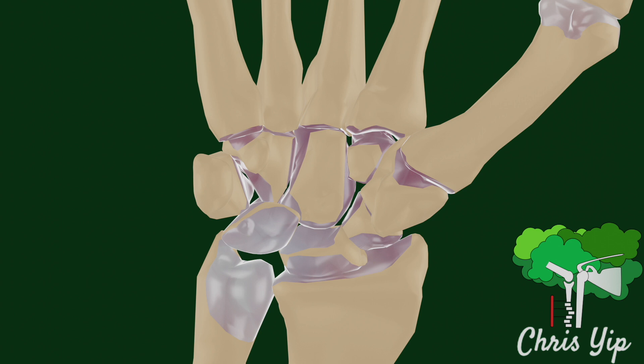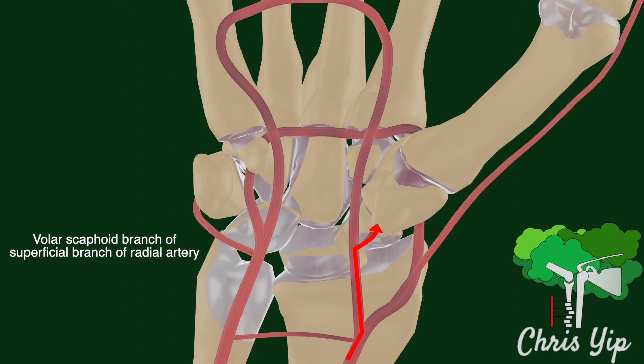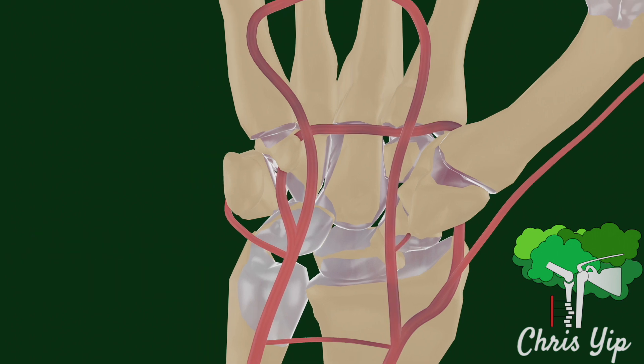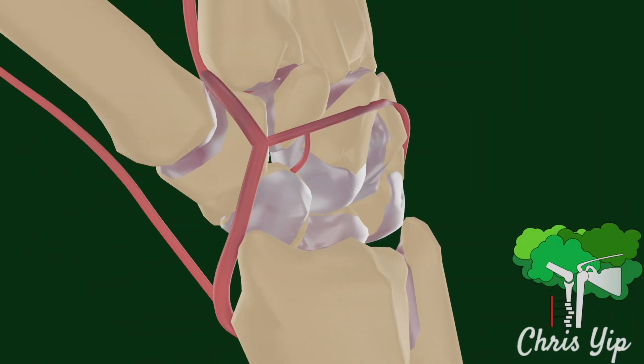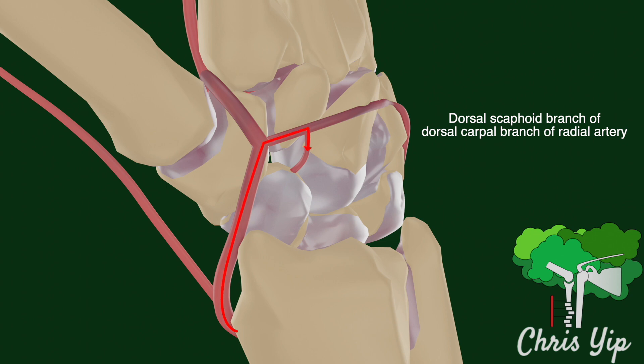As 80% of the surface area of the scaphoid is composed of articular cartilage, it can only receive blood from the volar scaphoid branch of the superficial branch of the radial artery and the dorsal scaphoid branch of the dorsal carpal branch of the radial artery.